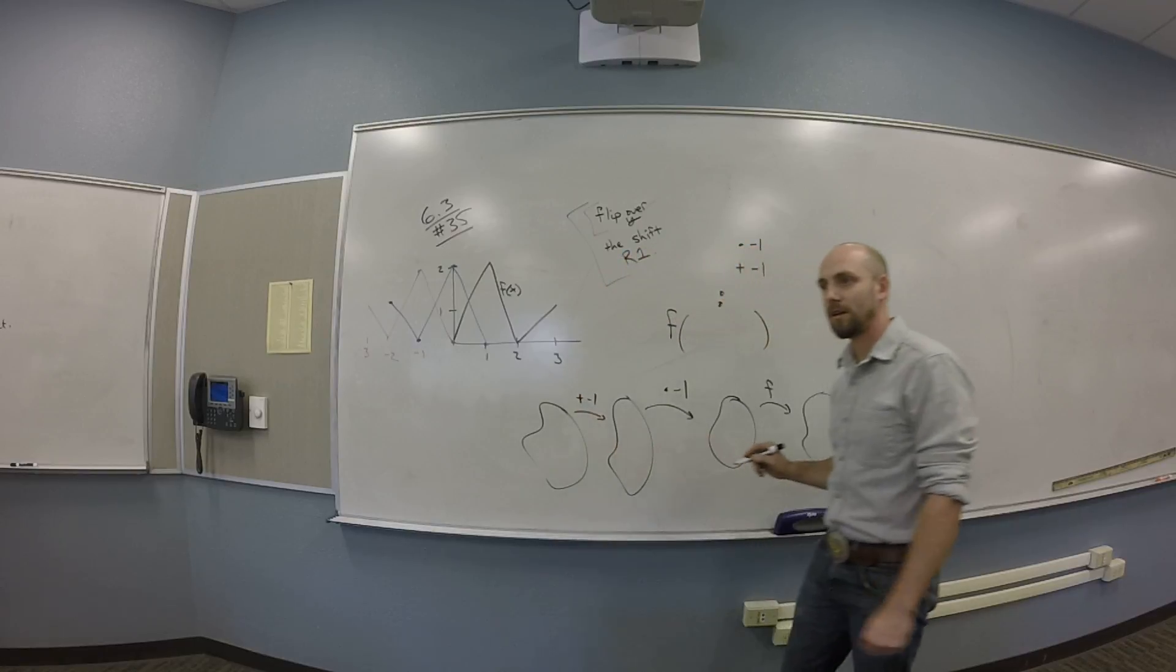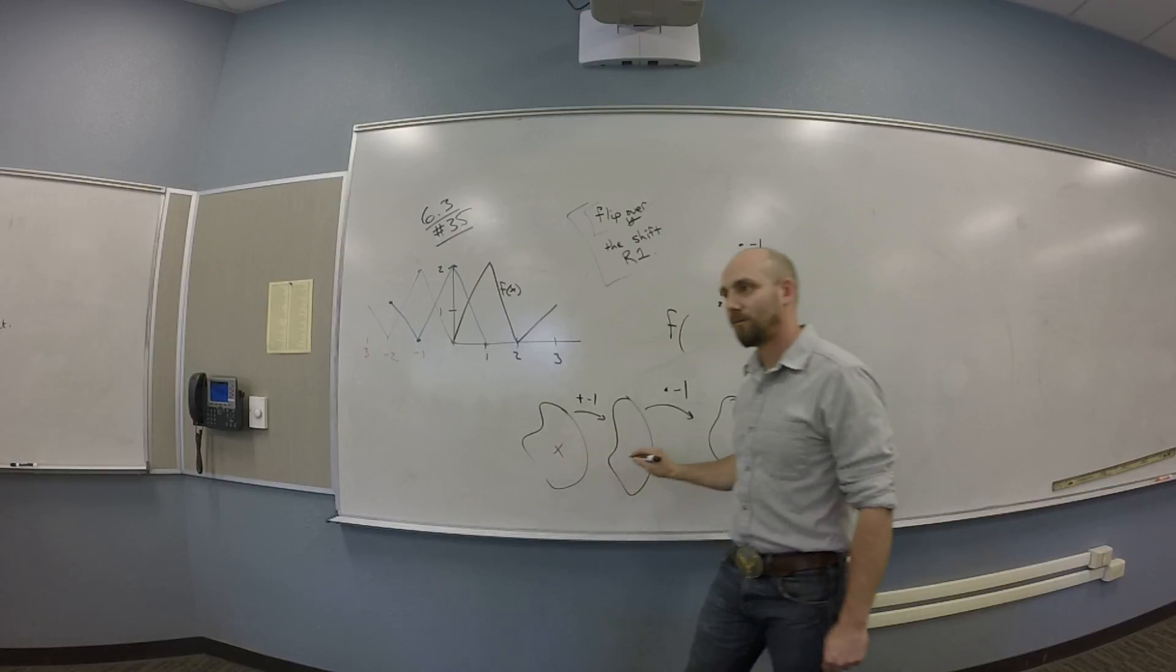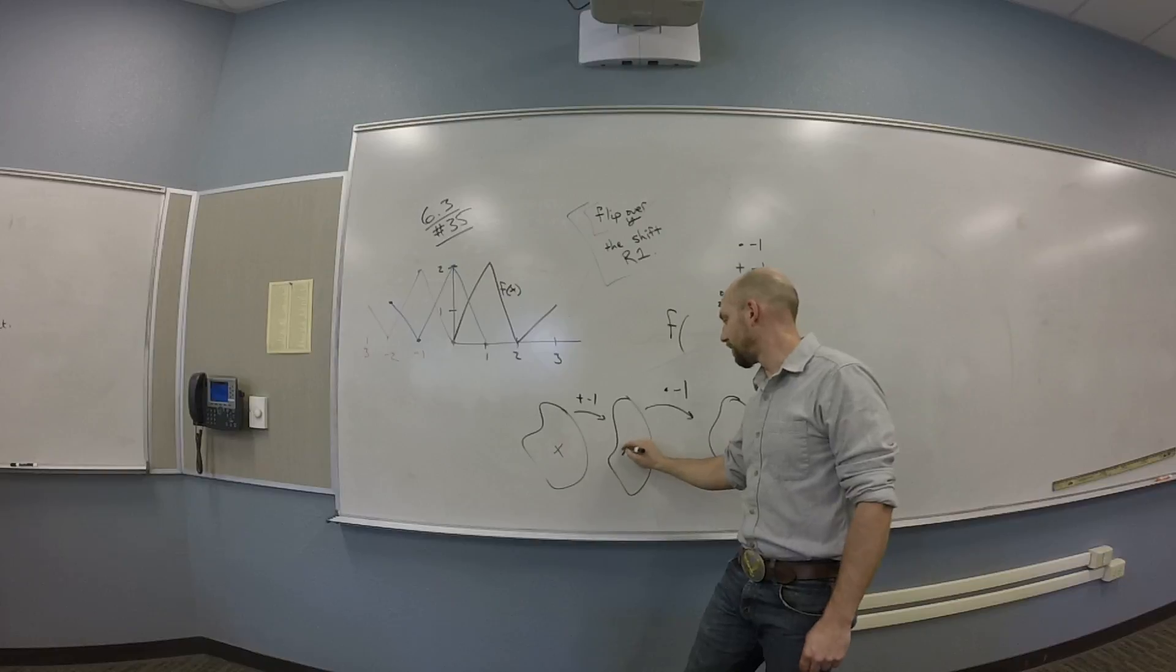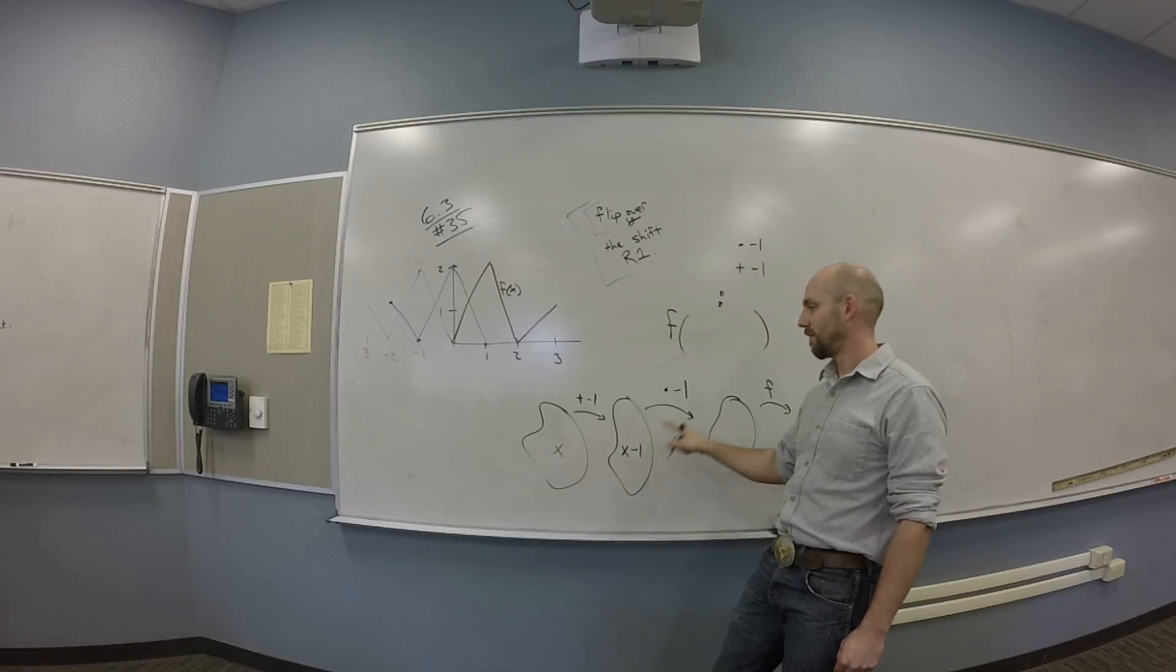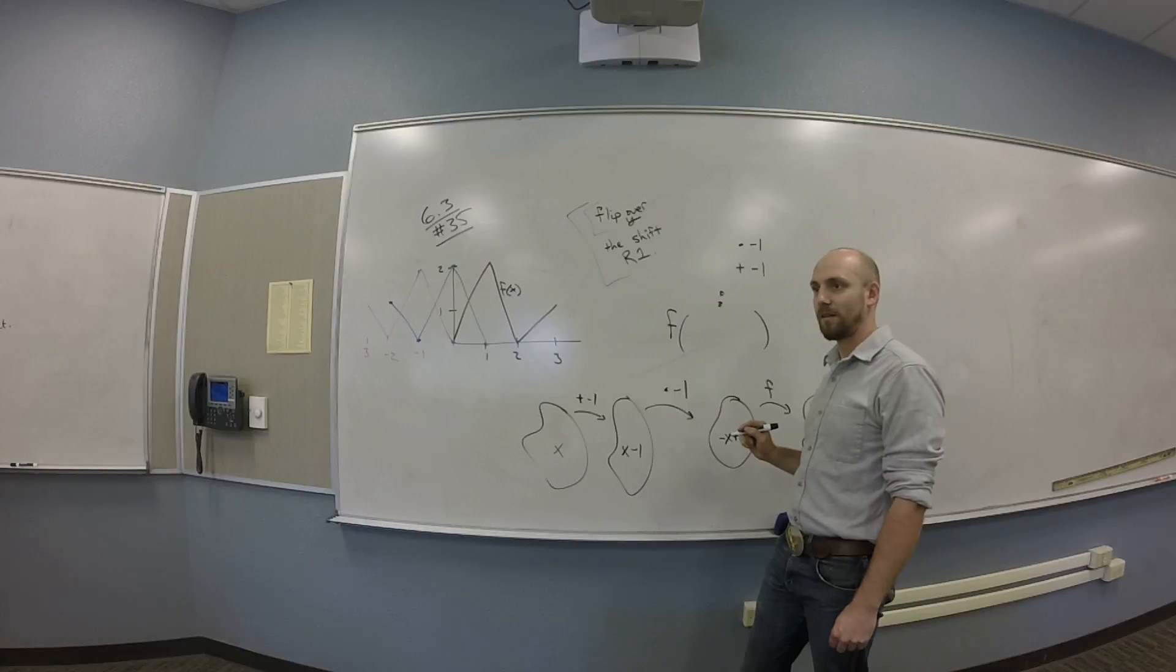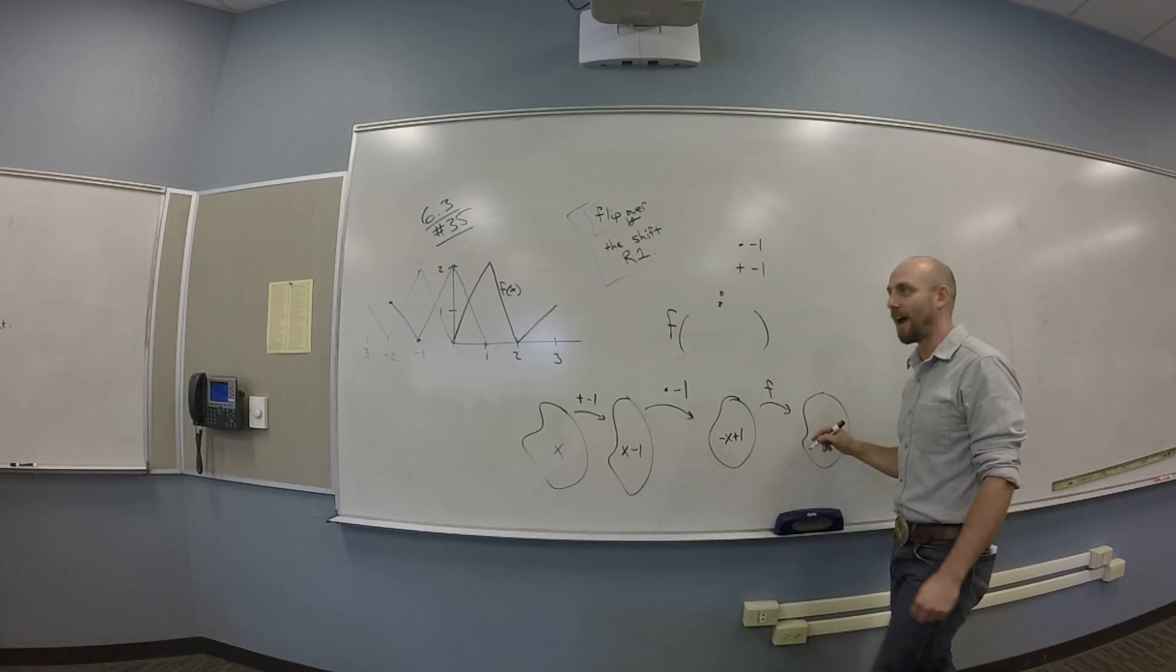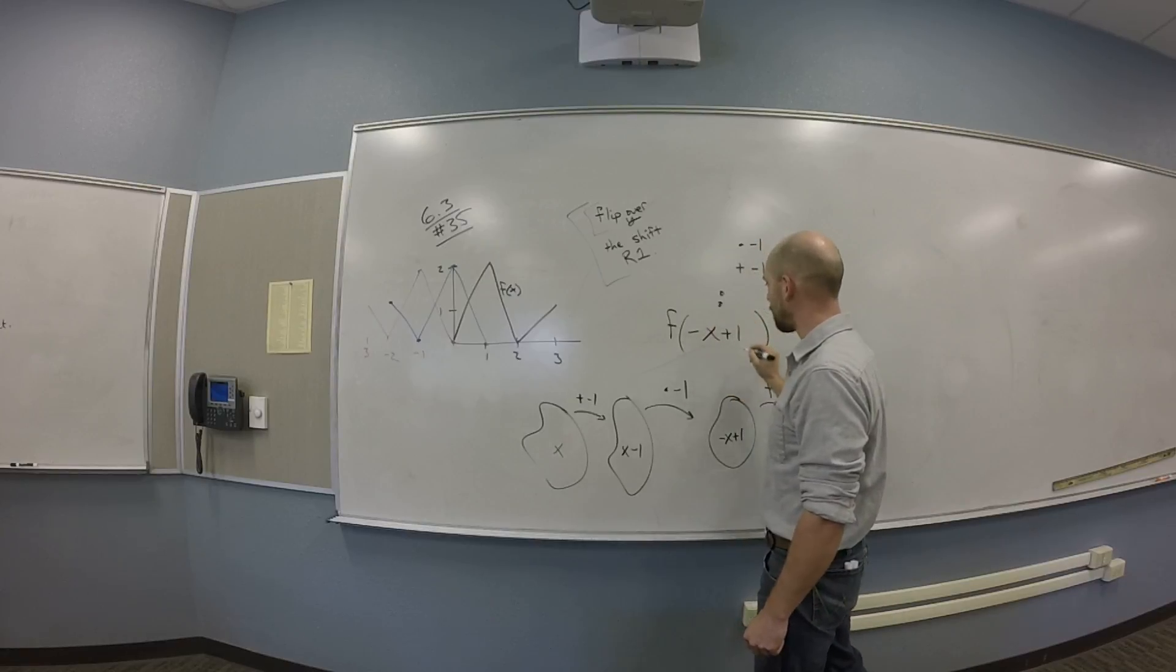And so if you start with an X here, what are you going to get here? You're going to shift. What looks like a shift, that's that X minus 1. And then you're going to multiply that by negative 1. So you get negative X plus 1. And then you take that and put it into F. So you should be doing F of minus X plus 1.